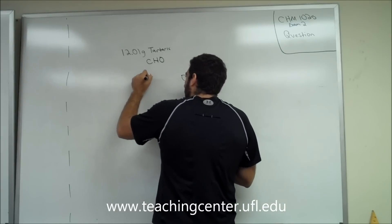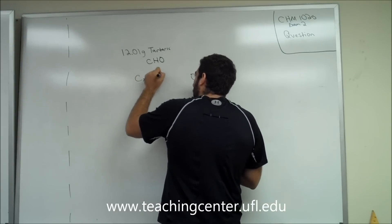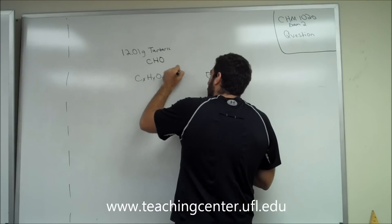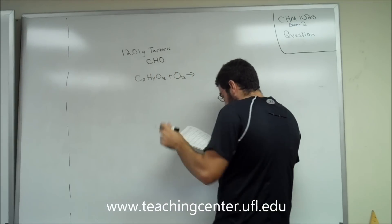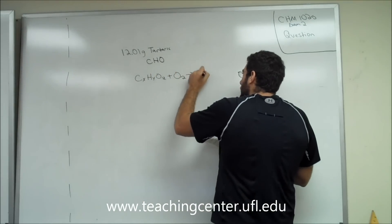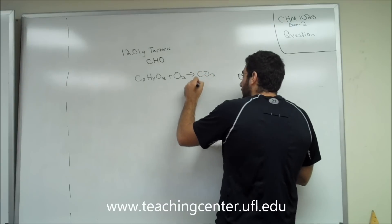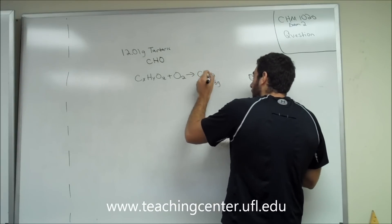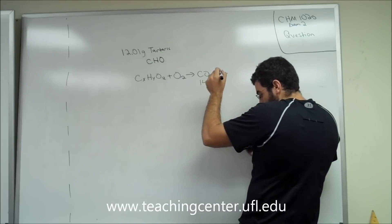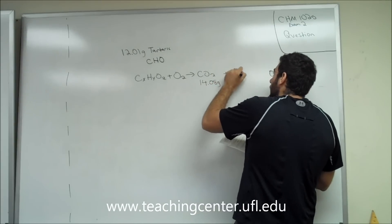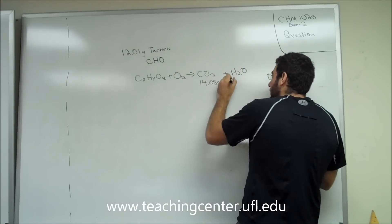So let's go ahead and write this out. So we have C-X-H-Y-O-Z plus oxygen yields CO2, which is 14.08 grams, plus H2O, which is 4.32 grams.